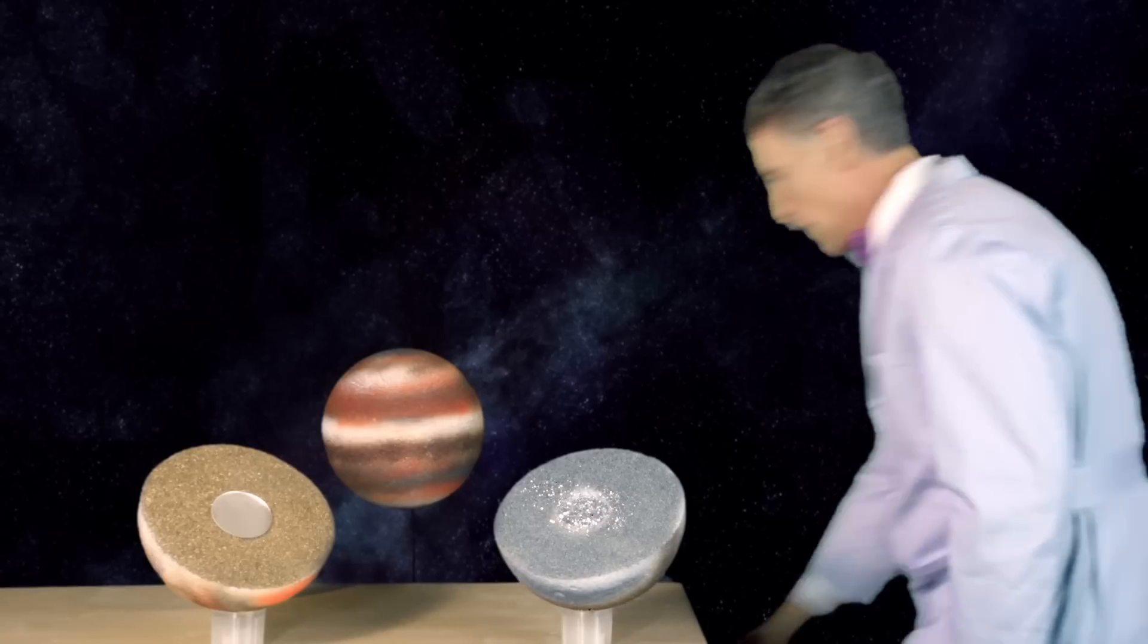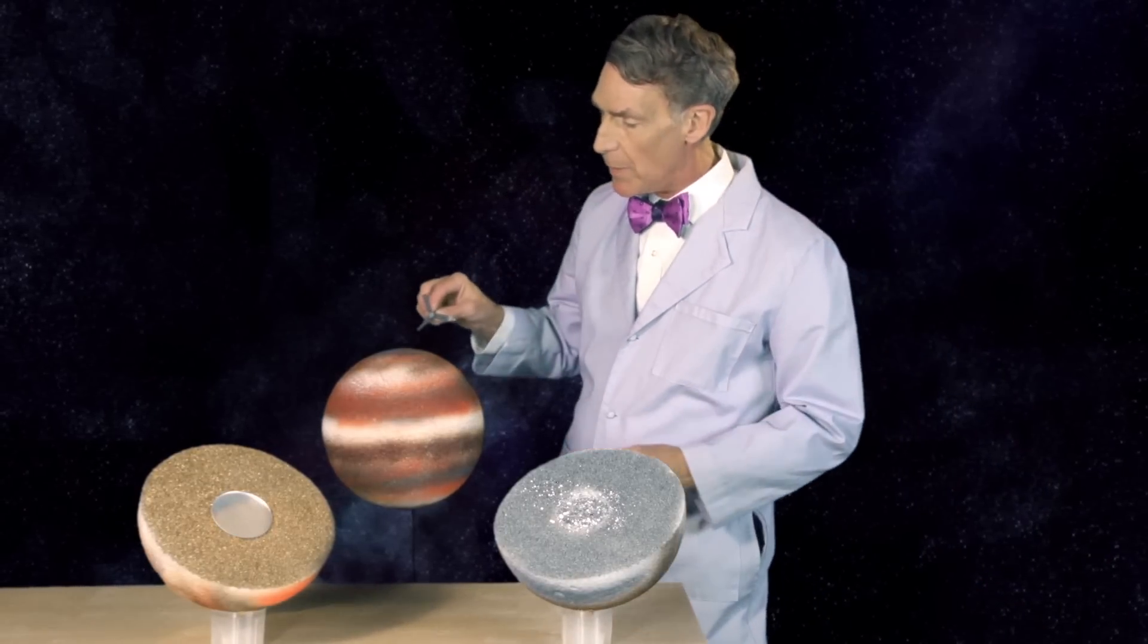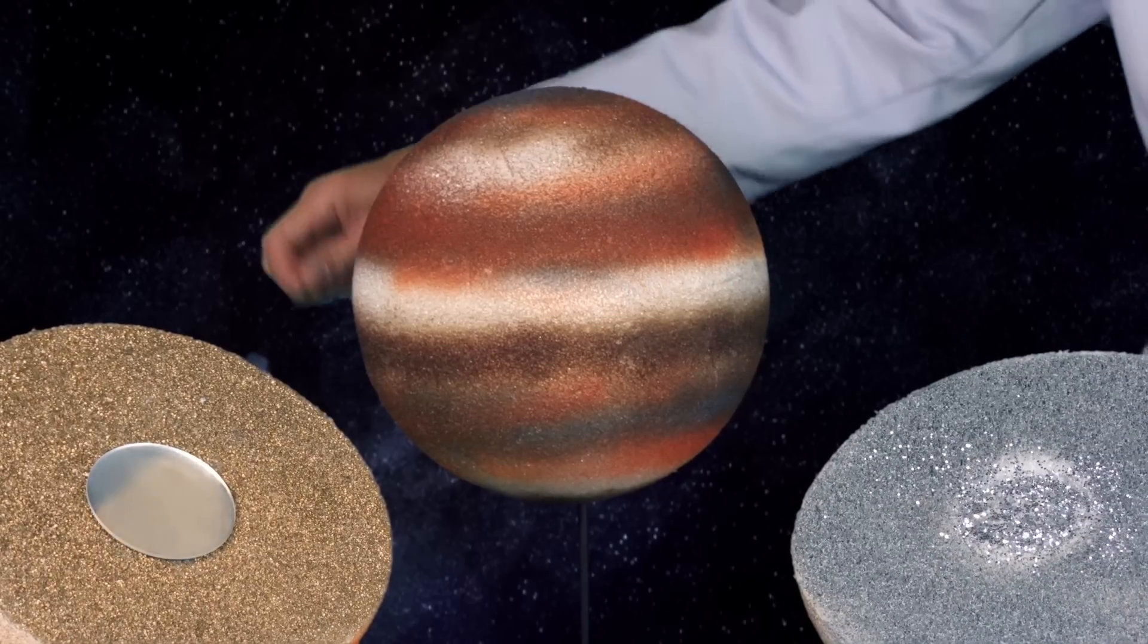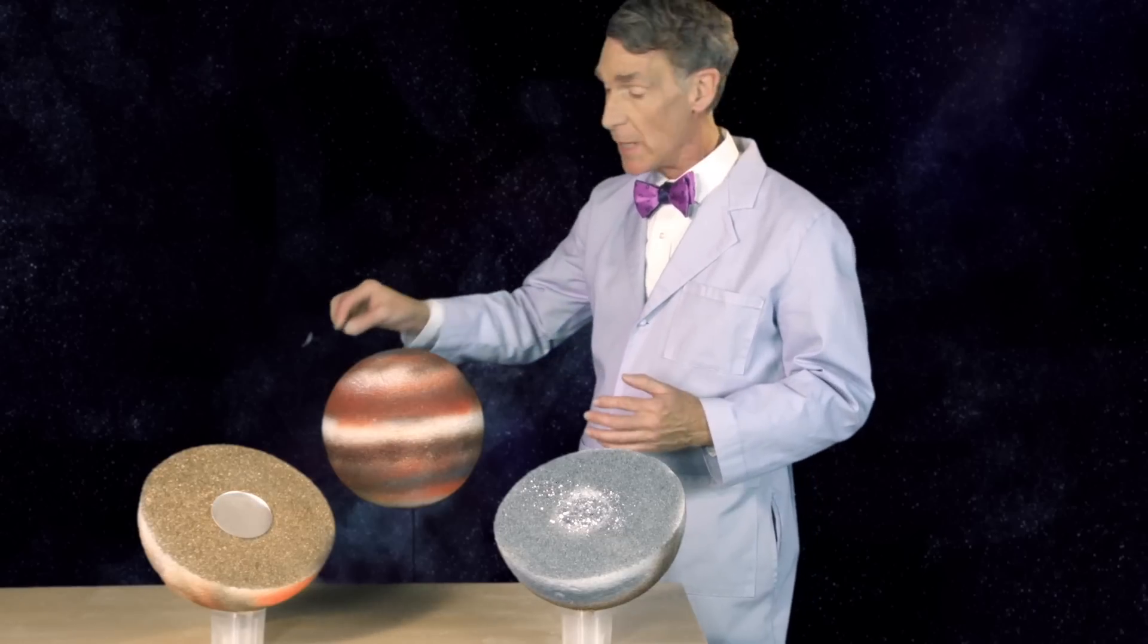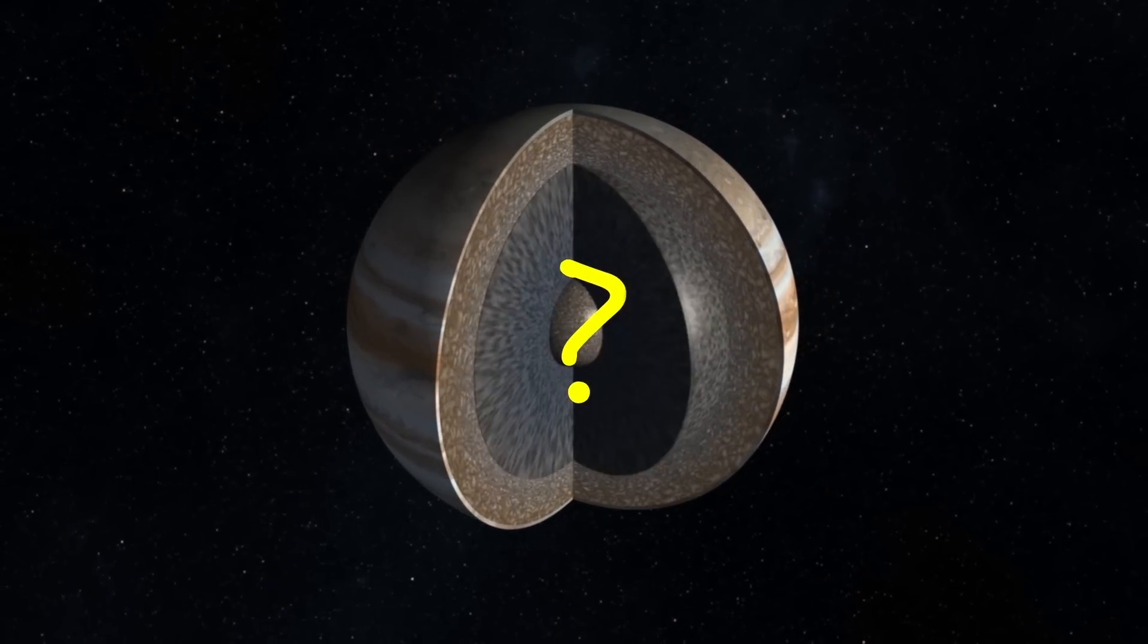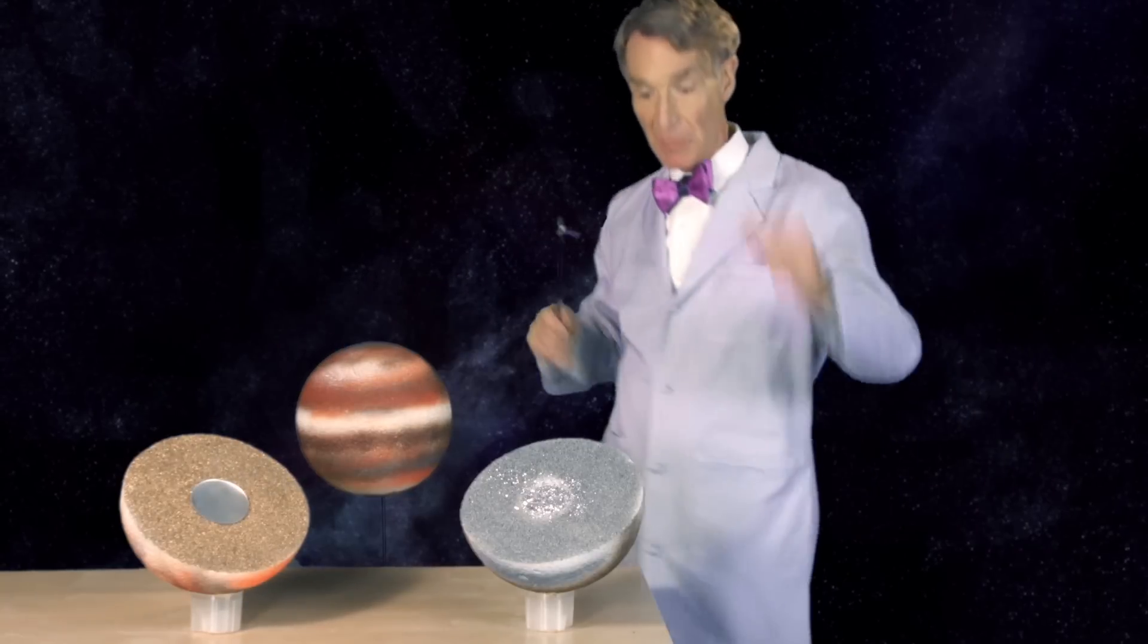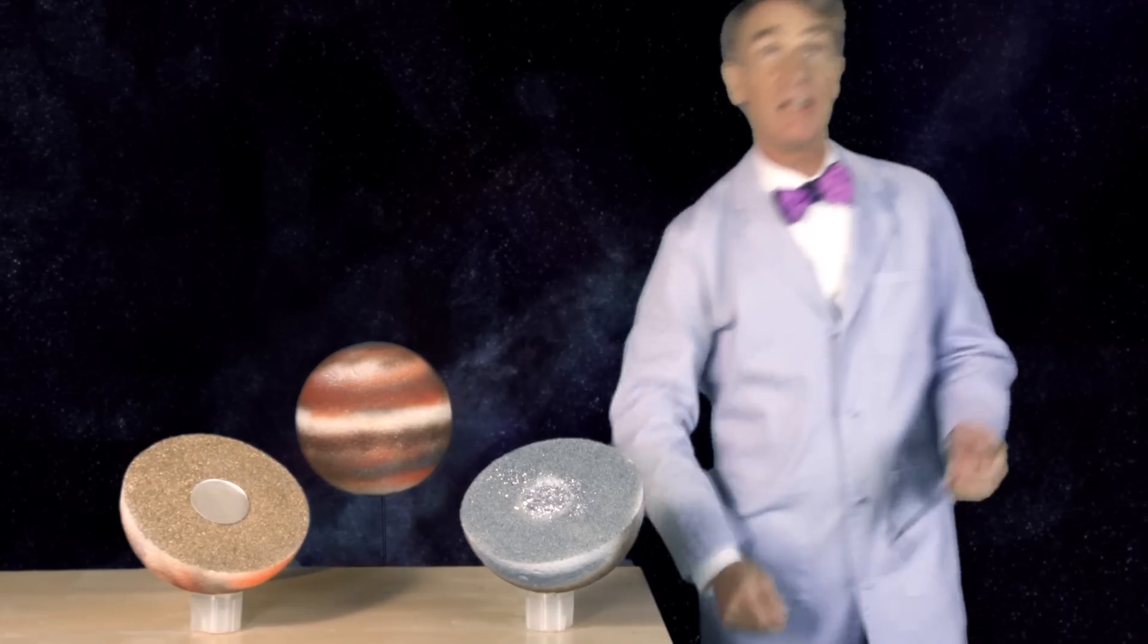So, we believe that by precisely measuring the path of Juno as it orbits Jupiter using the Doppler effect, we'll be able to determine from Jupiter's gravity the nature of what's inside. Is it heavy metal? Is it metallic hydrogen? Or is it rock?